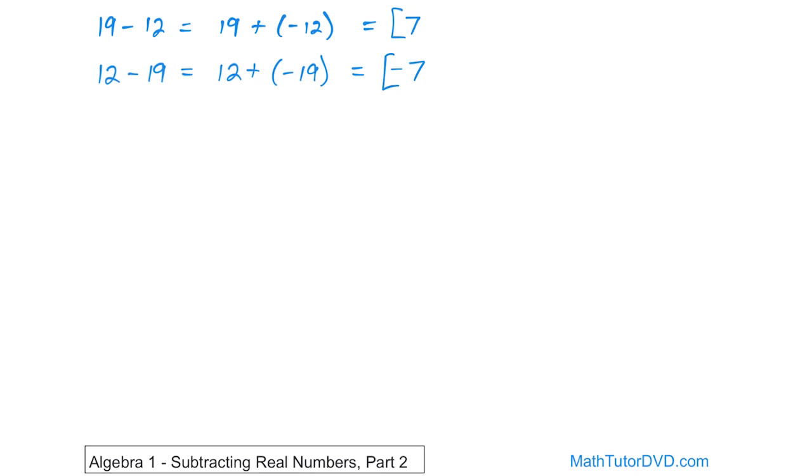So you see what's happening. Here, when you have 19 minus 12, you get positive 7. When you flip them around and make 12 minus 19, you get the same number, but it's negative 7. So that's something that you're going to probably see as you solve more problems in algebra. It's just kind of a thing to observe.